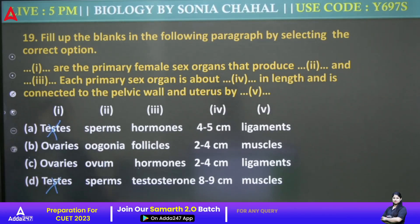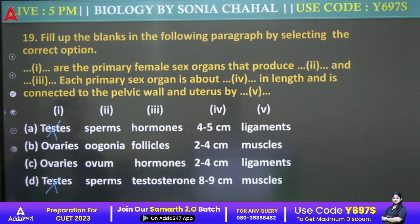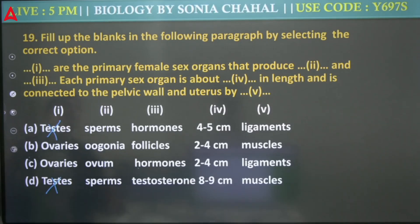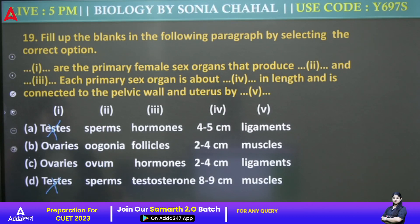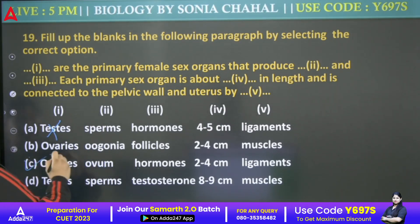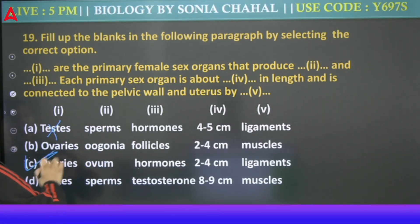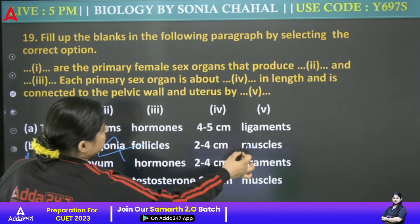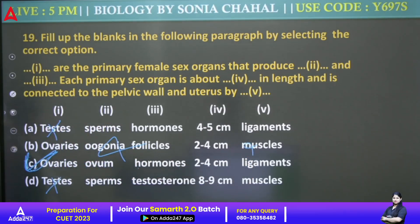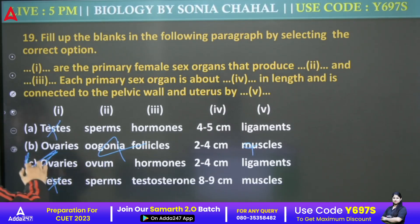Each primary sex organ is about 2 to 4 cm in length, and it is connected to the pelvic wall and uterus by a ligament — yes, that is correct. So our answer here will be C — the first option is incorrectly given, the second one is also incorrectly given. Answer is C.